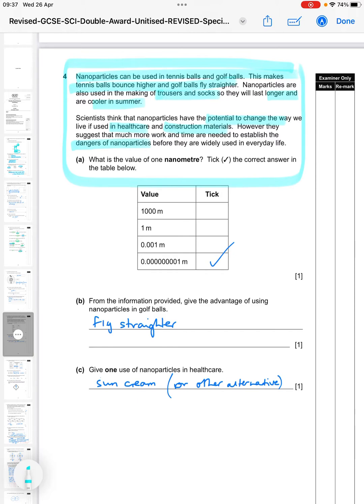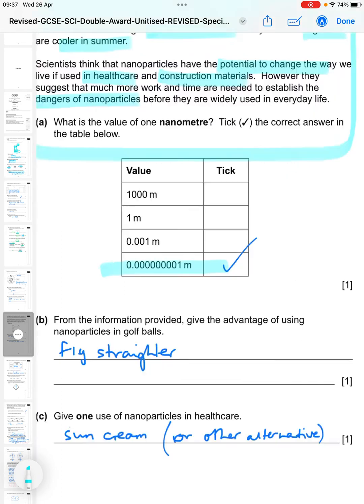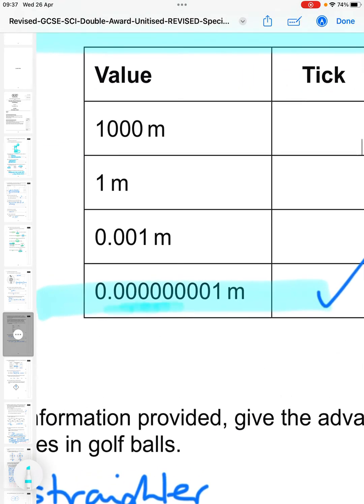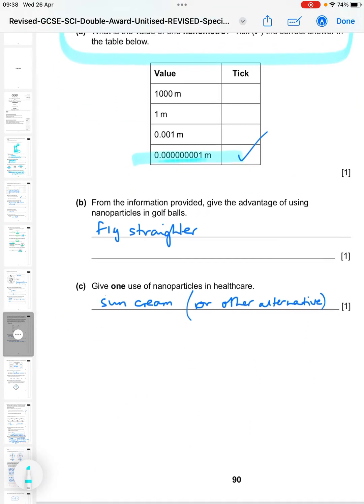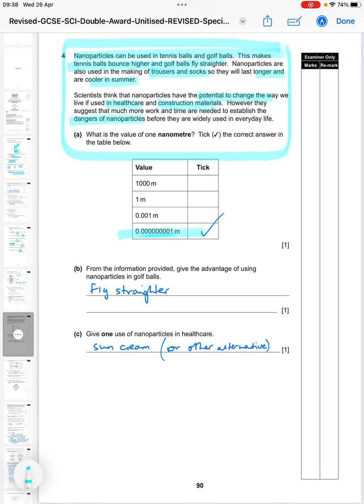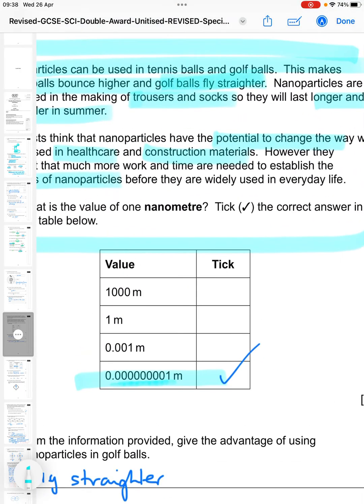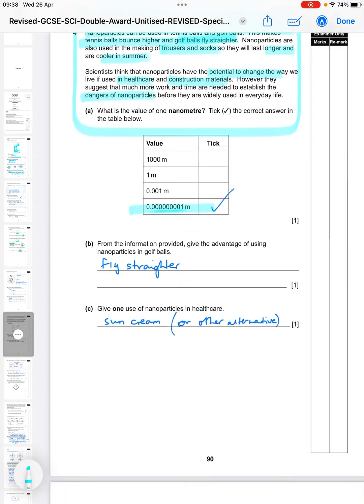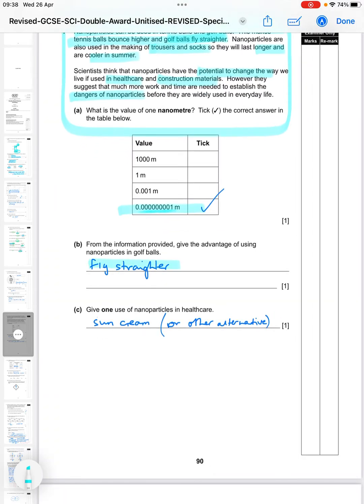So what is the value of one nanometer? Take the correct answer. It is 0.00000001 meters - that's in the order of 10 to the minus 9 meters. So from the information provided, give the advantage of using nanoparticles in golf balls. Well it tells you that the golf balls fly straighter, straight from that paragraph. And if you've read it to begin with, you shouldn't have to go back and hope too far to actually get the answer.